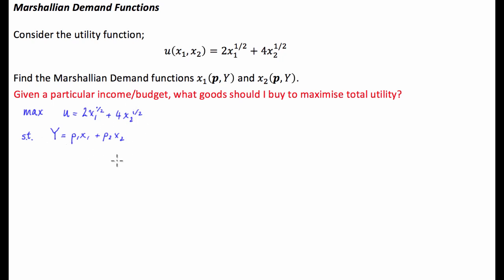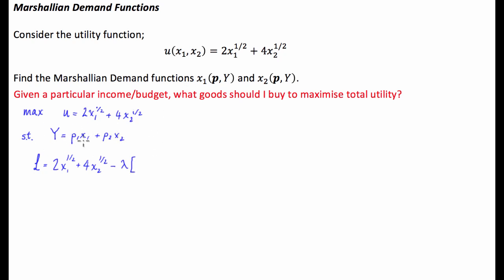With most constrained optimisation problems we employ the method of Lagrange. We set up our Lagrangian equation as our objective function: 2X1 to the half plus 4X2 to the half, minus our Lagrange multiplier times the constraint equal to zero — so we have income minus P1X1 minus P2X2.